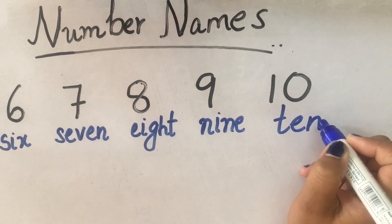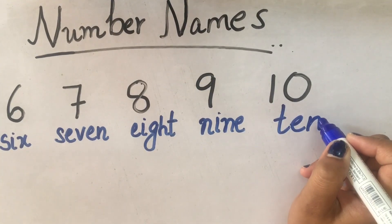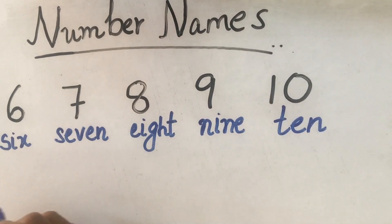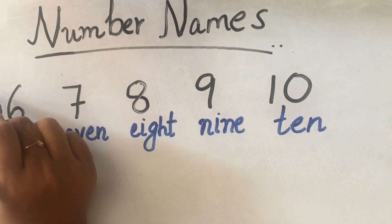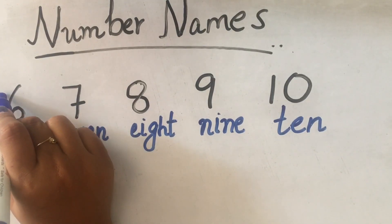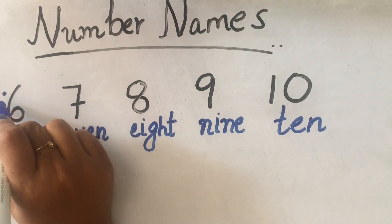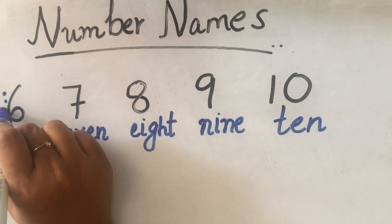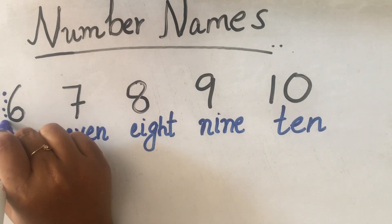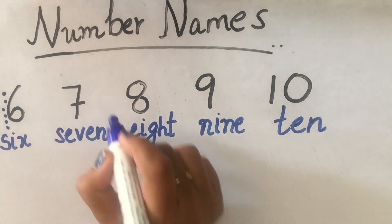Now I will show you how to make the dots. 6 has 6 dots — here: 1, 2, 3, 4, 5, 6. And 7 has 7 dots.